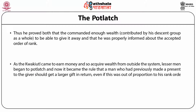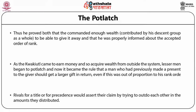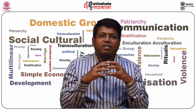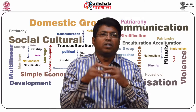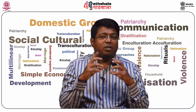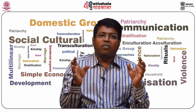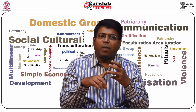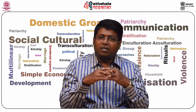As the Kwakiutl came to earn money and acquire wealth from outside the system, lesser men began to Potlach. It became the rule that a man who had previously made a present to the giver should get a larger gift in return, even if this was out of proportion to his rank order. Rivals for a title or for precedence would assert their claim by trying to outdo each other in the amounts they distributed. In summary, we have learnt about definitions and characteristics of primitive economy, stages of economy, and different types of hunting and gathering — hunting by weapons, traps, snares, engaging tamed animals, and poisoning.